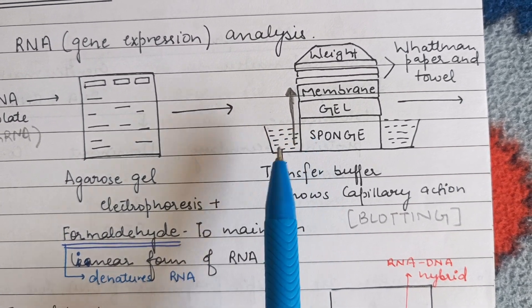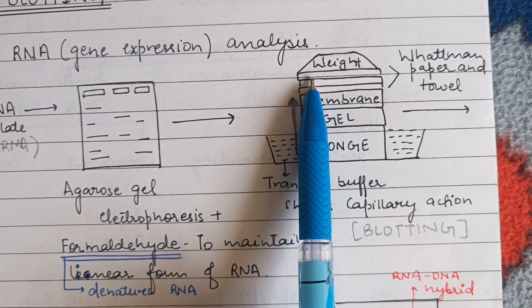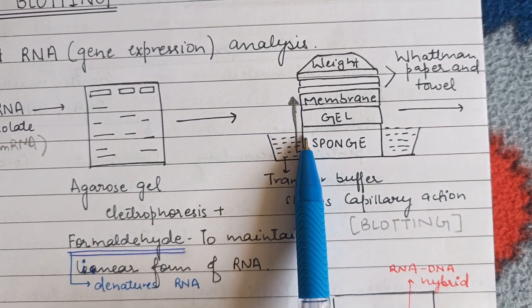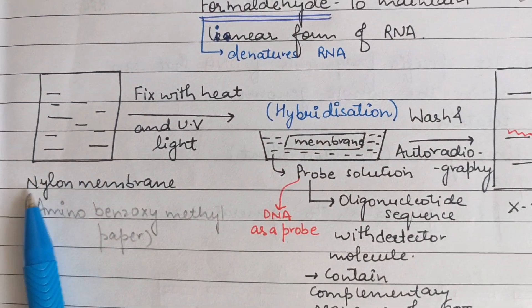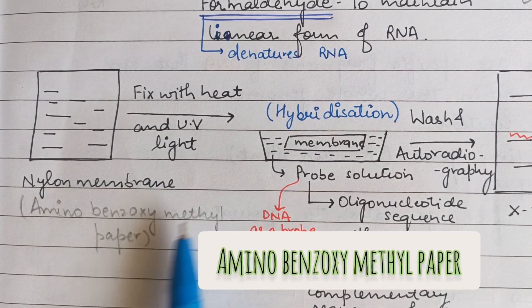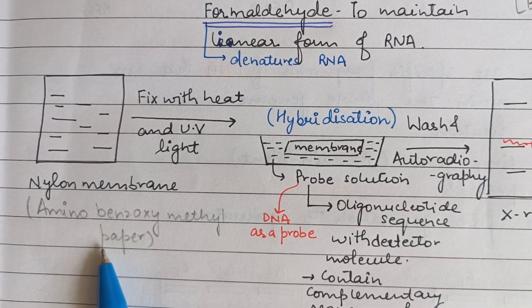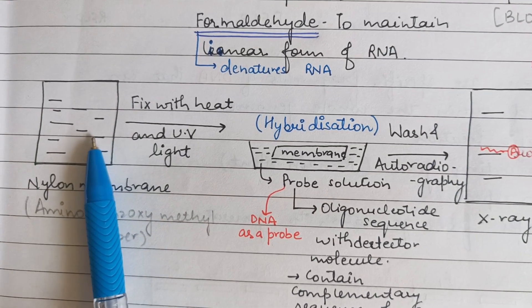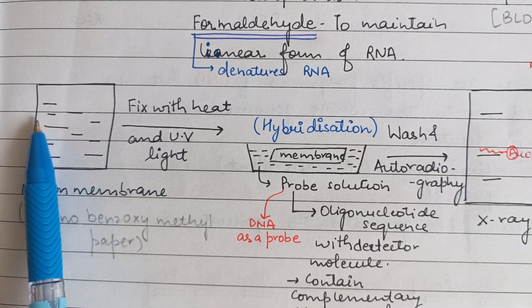With capillary action, the transfer buffer slowly moves from the gel to the membrane and then to the Whatman paper and towel. When the towel becomes wet, blotting has taken place and the bands on the gel have transferred to the membrane. The membranes used in Northern Blotting are the nylon membrane or aminobenzoxymethyl paper — this is different from Southern Blotting, which mainly uses a nitrocellulose membrane.